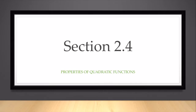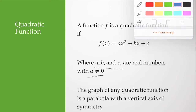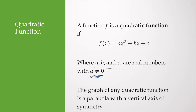Section 2.4 is all about the properties of quadratic functions. A function f is a quadratic function if it takes on the form f of x equals ax squared plus bx plus c, where a, b, and c are real numbers and a doesn't equal zero. Remember, a cannot equal zero because if a equals zero, we'd have a linear equation and that's not a quadratic.